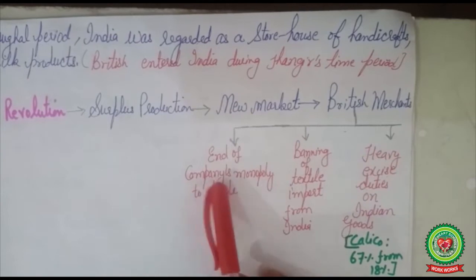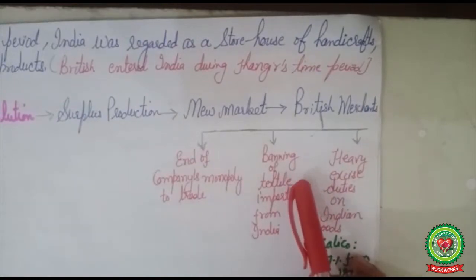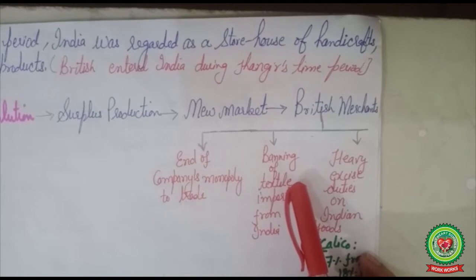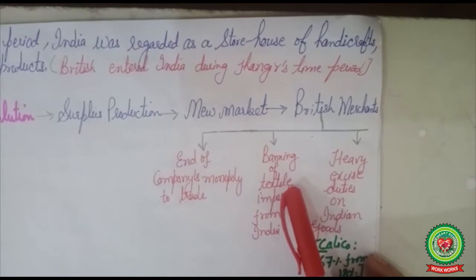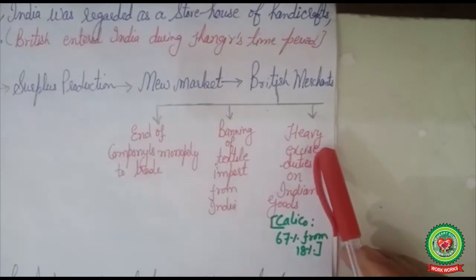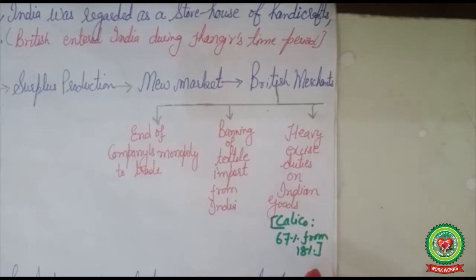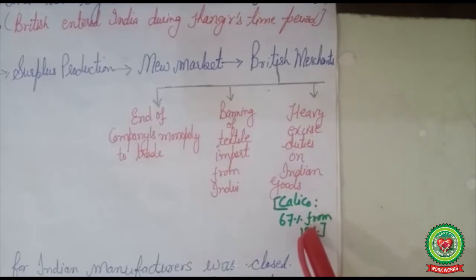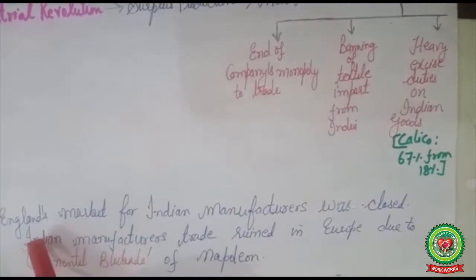The first demand was that the East India Company's monopoly to trade in India should be ended and all British merchants should be allowed to trade in India. The second demand was that import of textile, silk, and other handicrafts from India to England should be banned, because Indian goods were finer than machine-made goods. The third demand was that heavy excise duty should be imposed on Indian goods imported into England. Because of these demands, excise duties on Calico were increased from 18% to 60% to 67%, and England's market for Indian manufacturers was closed.